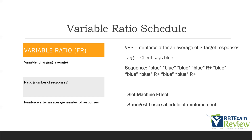Simply put, when you see VR3, deliver reinforcement every third response or so — sometimes two, sometimes four, sometimes three. That's why it's the slot machine effect: you don't want the client to know when the reinforcement is coming. Variable ratios produce the highest rate of responding because we're not sure when reinforcement is coming. It's the strongest basic schedule there is. For example, with VR6 you would deliver reinforcement after six, then four, then seven, then five responses — and so on.